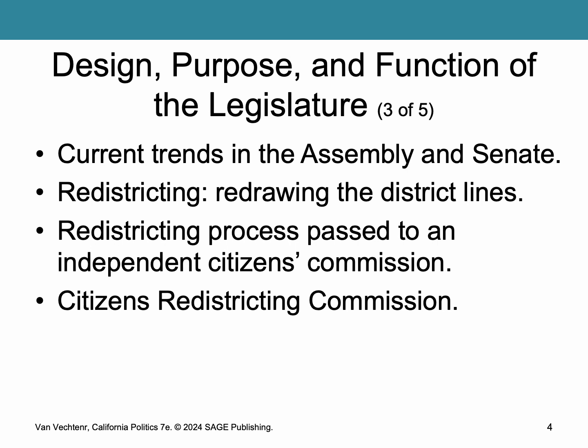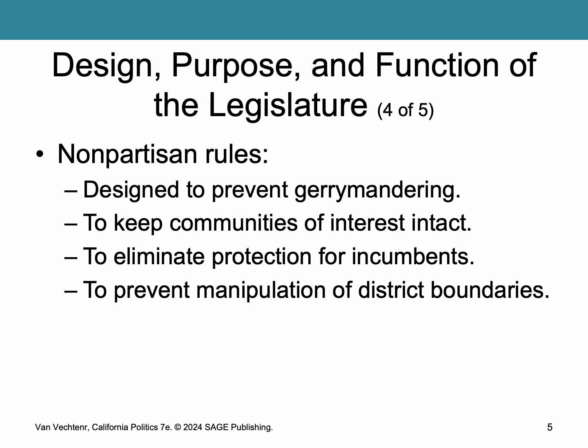The California Redistricting Commission is a politically balanced and demographically diverse 14-member committee constituted through a multi-stage process. They draw all redistricting lines based on strict non-partisan rules to ensure fairness and prevent gerrymandering — the redrawing of districts in a discriminatory fashion. These rules mandate equal population in districts, aim to keep communities of interest intact, and eliminate protections for incumbents and political partisanship. Virtually every aspect of the process is open and participatory to minimize problems.